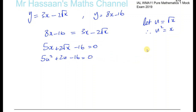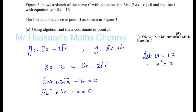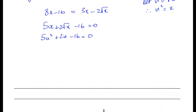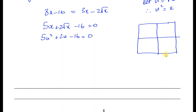Since the question doesn't ask for an exact or decimal value, we can factorize this quadratic. This is one where you have to split the middle term. The two numbers must multiply to give 5 times negative 16, which is negative 80u squared, and add to give plus 2u. The numbers plus 10 and minus 8 work: they multiply to negative 80u squared and add to plus 2u.